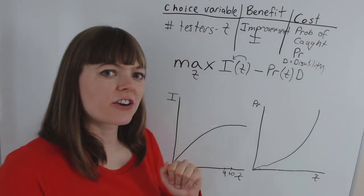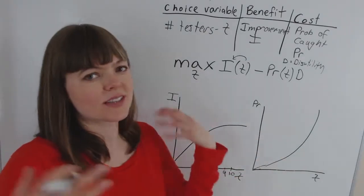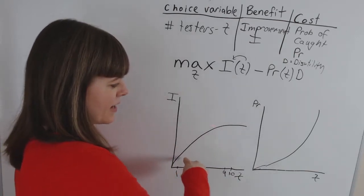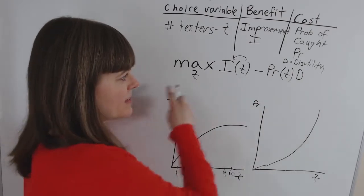the higher and higher your marginal likelihood of getting caught is because everyone's going to be talking about it. It's just hard to keep them under wraps. So we do have the classic benefit and cost shapes of the functions associated with this model.